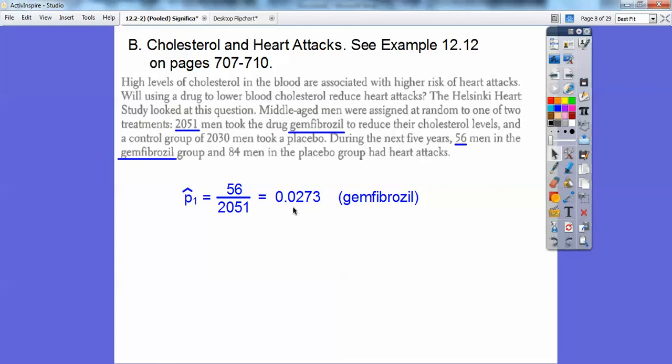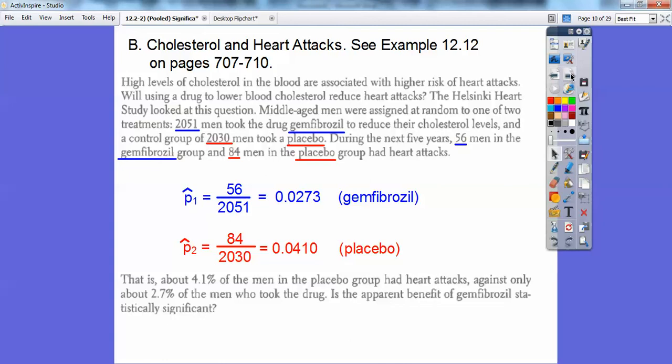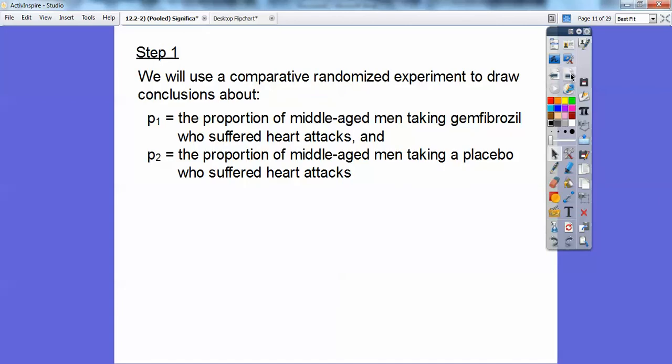Those are the guys that took the drug. The P2 hat is 0.0410, the placebo group. So that is about 4.1 percent of the men in the placebo had a heart attack against only about 2.7 percent of the men who took the drug. So is this apparent benefit of the drug statistically significant?